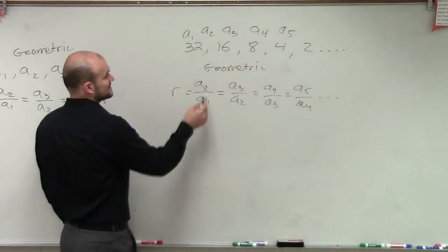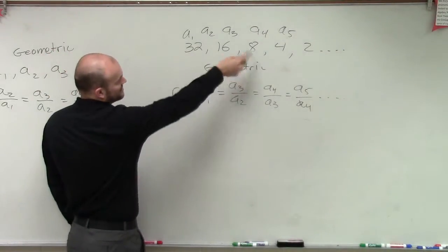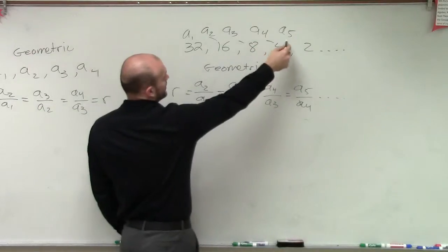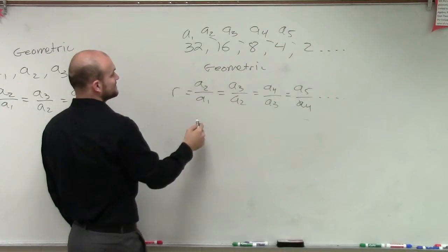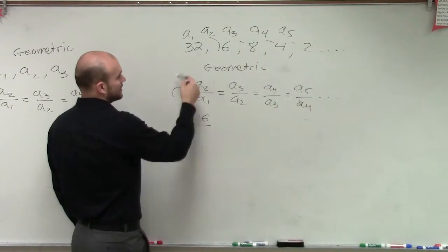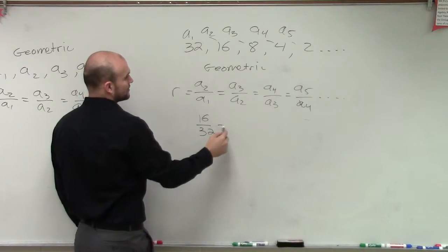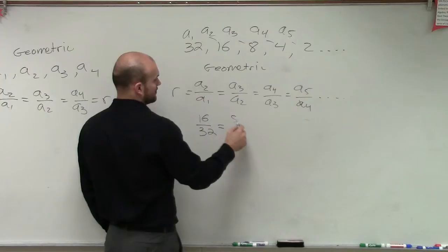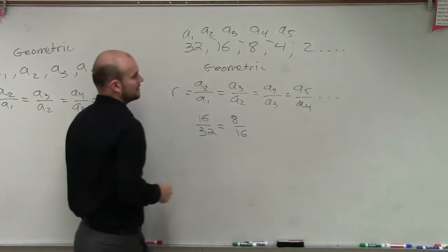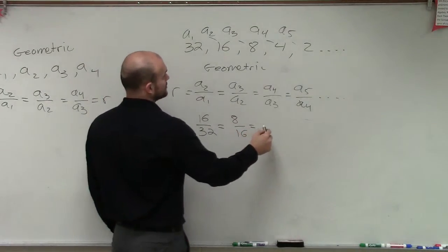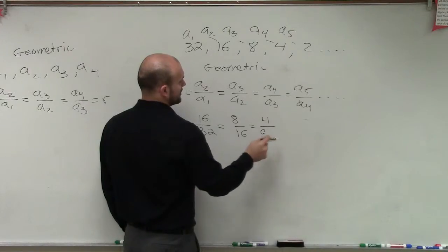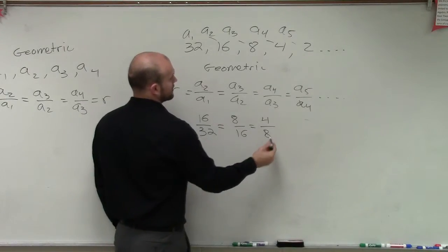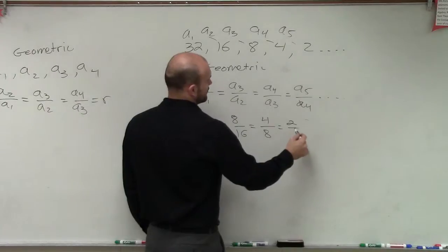If I take a_2 over a_1, let's do a_2, which would be 16, over a_1, which is 32, which equals a_3 over a_2, which then equals a_4 over a_3, which then equals 2 over 4.